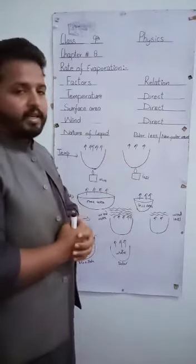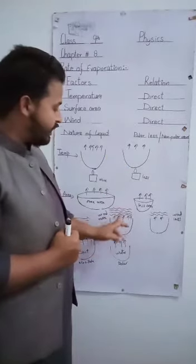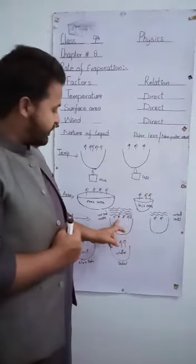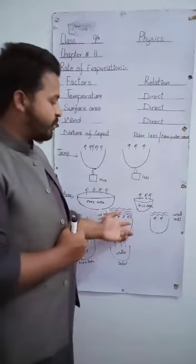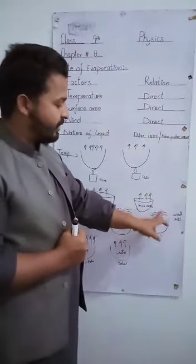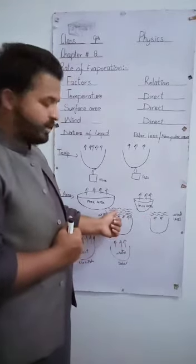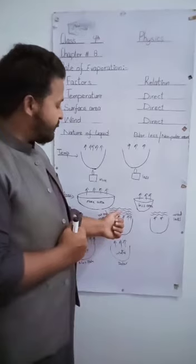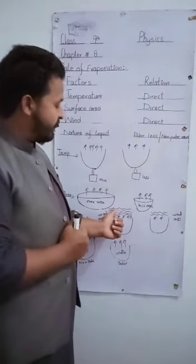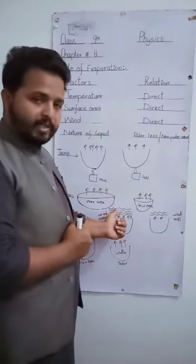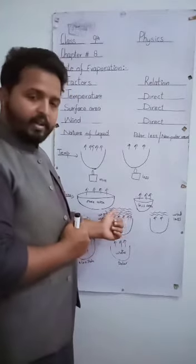Wind also has a direct relation. If wind blowing over the water surface is more, then evaporation is more. If wind blowing over the water level is less, then evaporation is less. Because if wind is more, it means that it will sweep the water vapors over the surface area away.